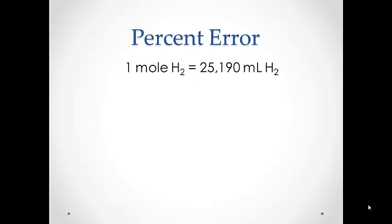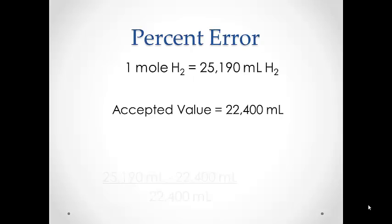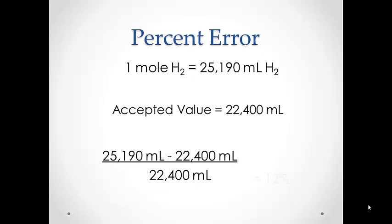This procedure has been done before under much more controlled circumstances, and the accepted value for the volume of one mole of gas is 22,400 milliliters. So we want to determine our percent error. We take our value found in our lab and subtract the accepted value, then divide by the accepted value. We end up with a percent error of 12 percent.